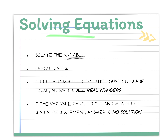You're going to isolate the variable and solve. Sometimes the left side and the right side of the equation are going to be equal. When that happens, your solutions are all real numbers. In other words, if the variable is x, any value for x is going to work in that equation. So the solution is basically every solution, or infinity.